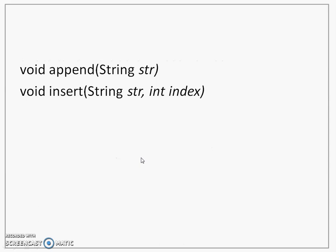The methods available for text field can also be used with text area. Apart from those, there are two additional methods of interest. The append method takes a string as a parameter and adds it to the end of the text area. The insert method allows you to insert or add a string at a particular index number within the text area content. Whatever string is displayed in a text area, you can assume each character has an index number starting with zero, so you can figure out exactly where you want to insert the string.